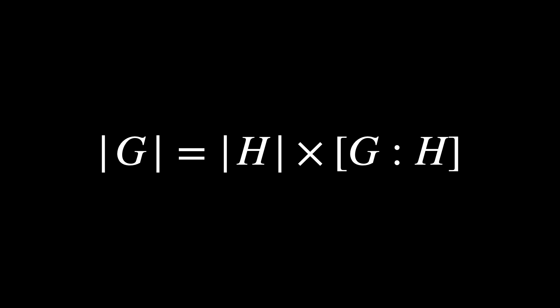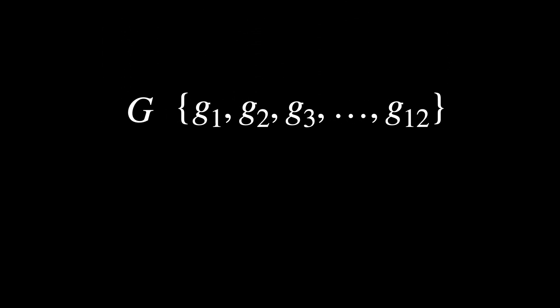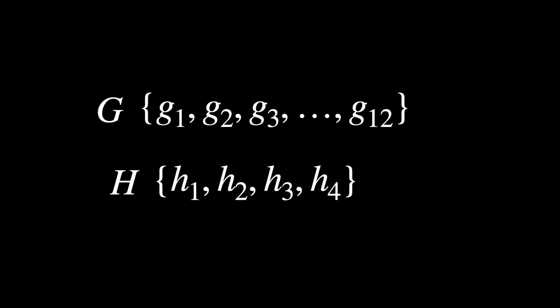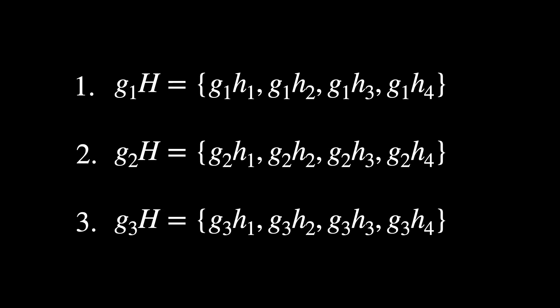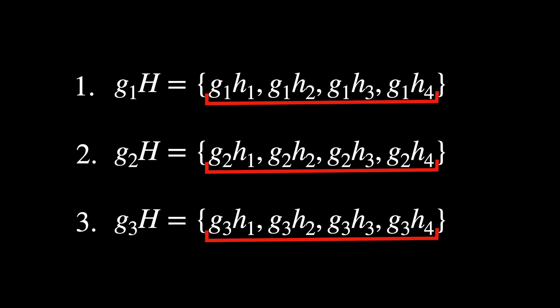Subgroups help us understand the internal divisions within a group, but cosets allow us to explore how these divisions influence the arrangement of the entire group. Cosets help us partition the entire group into equally sized segments, and each coset shares the same number of elements as the subgroup. This brings us to one of the fundamental theorems of group theory — Lagrange's theorem — which states that the order of any subgroup H of a finite group G divides the order of G. For example, a group G of 12 elements with subgroup H of 4 elements forms 3 distinct cosets, each containing 4 elements, perfectly partitioning the group.